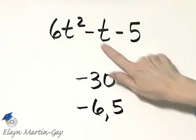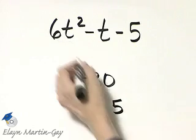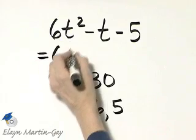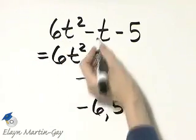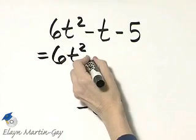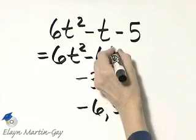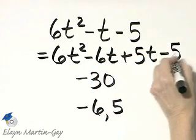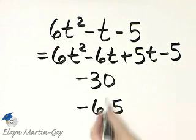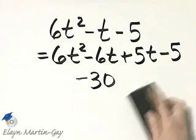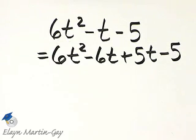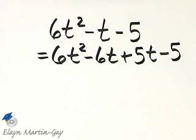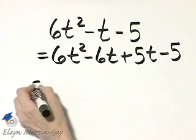So remember what you do, you rewrite the middle term using these coefficients. So that's minus 6T plus 5T minus 5, and I've rewritten, but I haven't changed, because negative 6T plus 5T is still negative 1T or negative T.